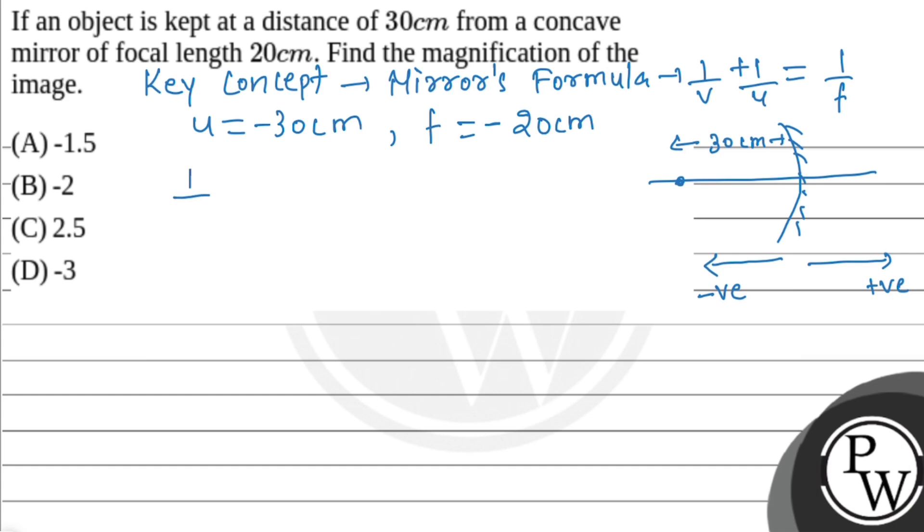1/v plus 1/u, which is minus 30, equals 1/f, which is minus 20. So 1/v equals 1/30 minus 1/20 equals 2 minus 3 over 60.